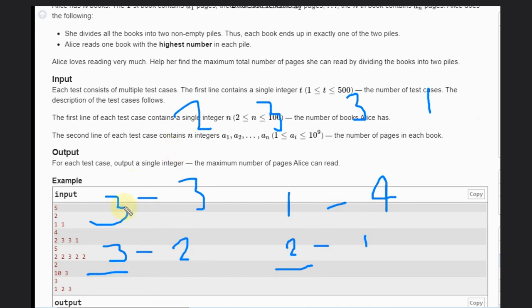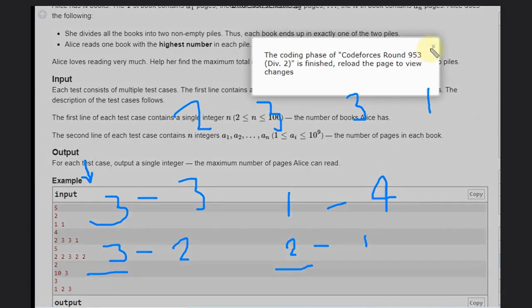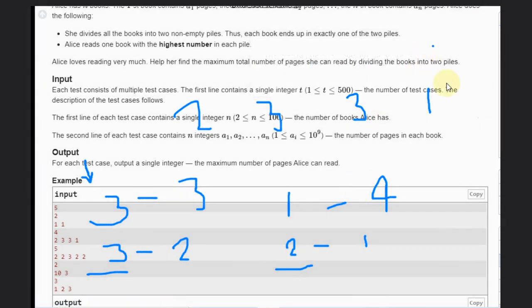So which book from this pile I can read? I can read only this book. From this pile which book I can read? I have to read this file because the highest number is four. So the highest number is four. That is the main scenario here. So in this case, answer will be three plus one, that is four.